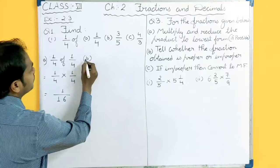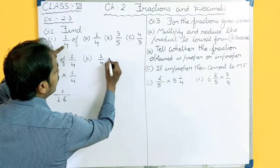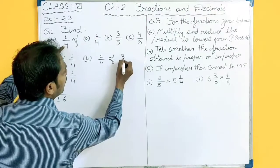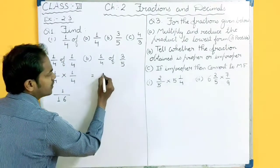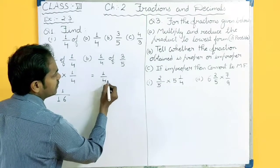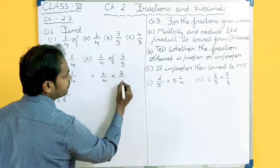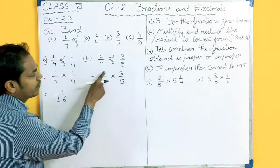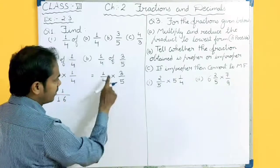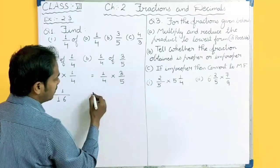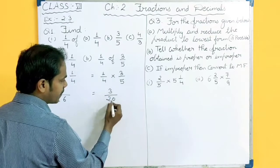Same with part b. One fourth of three upon five. In the first step you will replace 'off' with a multiplication sign. Numerator will be multiplied by numerator and denominator will be multiplied by denominator. One threes are three and four fives are twenty, so the answer is three upon twenty.